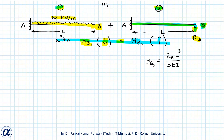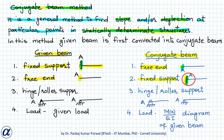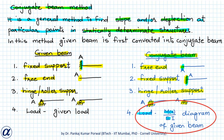To find vertical displacement of point B in beam 1, we use conjugate beam method. We convert the given beam into what we call a conjugate beam. To do that, we replace a fixed support with a free end, and we replace a free end with a fixed support. A hinge or roller support remains a hinge or roller support — no change is made. The load on the conjugate beam is the M/EI diagram of the given beam. That is, we find the bending moment diagram for the given beam with the given load, divide it by EI, and apply that as loading on the conjugate beam.